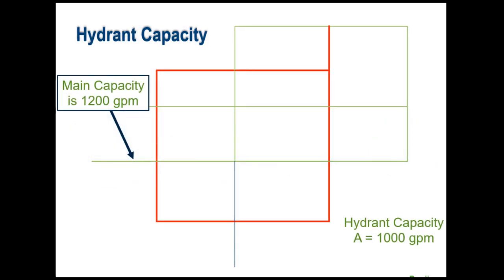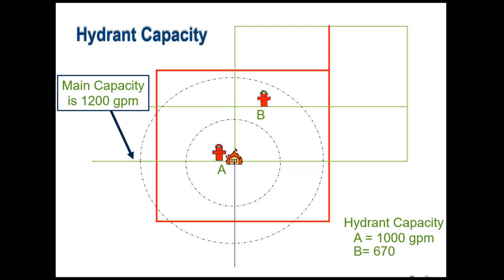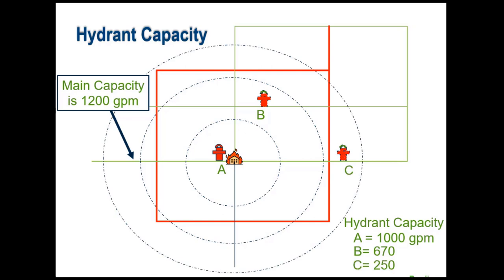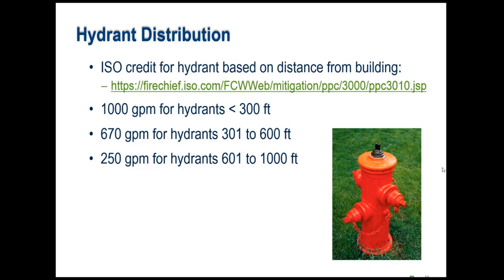Hydrant capacity is evaluated by counting hydrants within concentric circles around the fire. Within about 300 feet you get full credit for 1,000 GPM; from 300 to 600 feet the credit is 670 GPM; further away it drops to 250 GPM. The idea is to ensure water can actually be extracted. You could have large 48-inch and 36-inch mains intersecting, providing enormous potential flow, but with no hydrants on them the available fire flow would be zero. These numbers come from ISO.